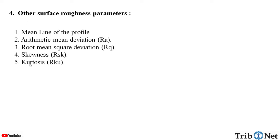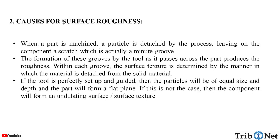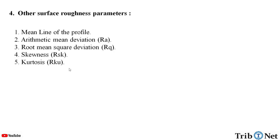In this video, we understood what is surface roughness, what are the main causes for the surface roughness, and what are the three main lengths of the surface roughness parameters — traversing length, assessment length, and sampling length — as well as the other surface roughness parameters which we will be studying in the next video.